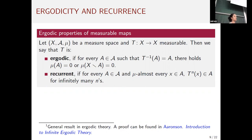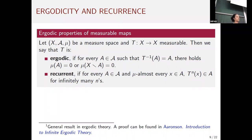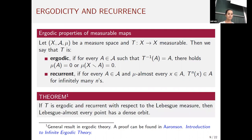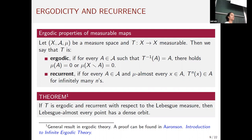Since this dynamical system is defined by a function which may not even be continuous, we need tools from ergodic theory. A map is ergodic if every measurable backwards-invariant set has either zero measure or full measure — analogous to topological transitivity but for measurable sets. A map is recurrent if for every measurable set A, almost every point in A returns to A infinitely many times. If a map is both ergodic and recurrent, then almost every point has a dense orbit.